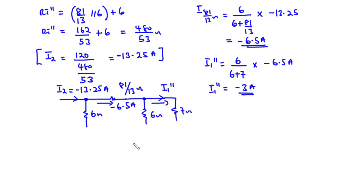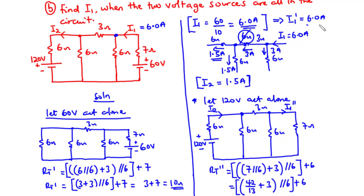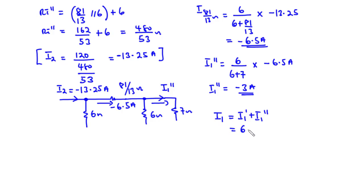Since we need I1 with both sources active, we apply superposition: I1 = I1' + I1'' = 6 + (−3) = 3 amperes. Therefore the value of I1 when both voltage sources are in the circuit is 3 amperes. That's it for today's video — thanks for watching!